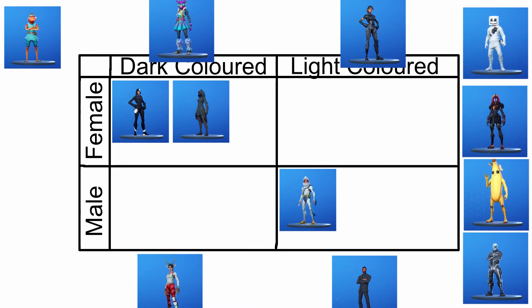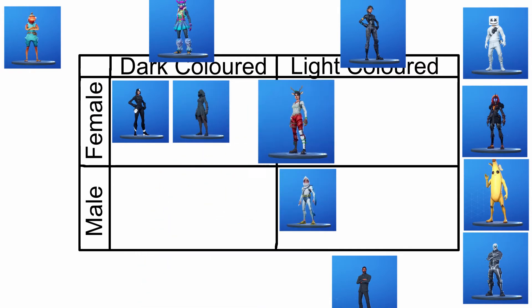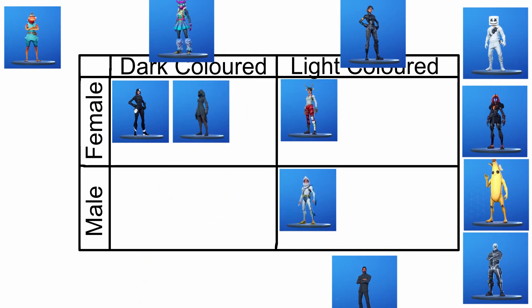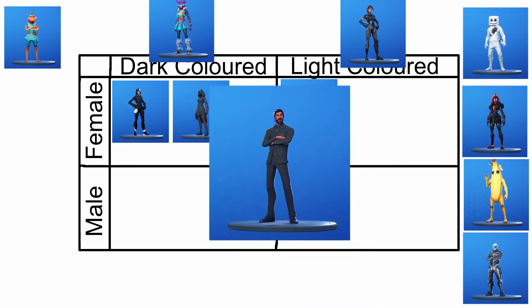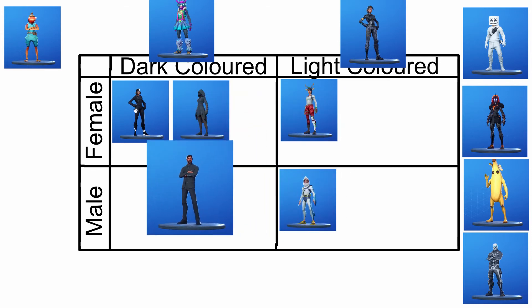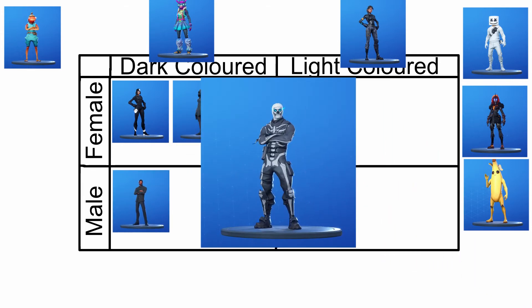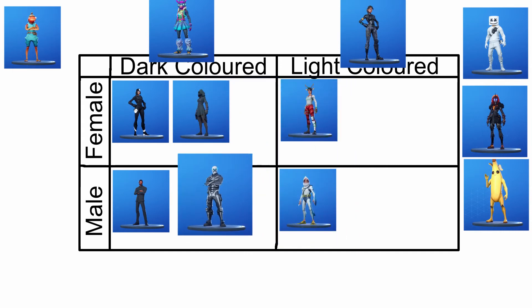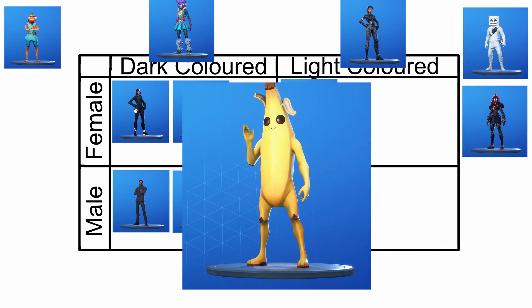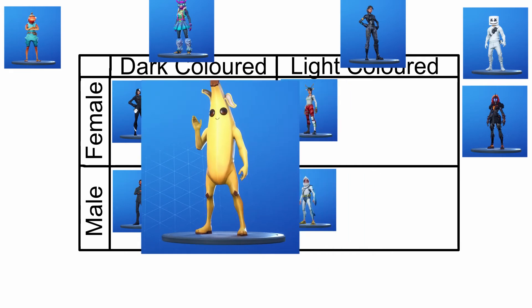Coming round I've got a female, I'm going to go with her top half and call her a light coloured. Coming on round I have a male here in a dark coloured, and another dark coloured male. And here I have a banana — as you can see, neither male nor female shall banana be, so I'm going to put him to the side.